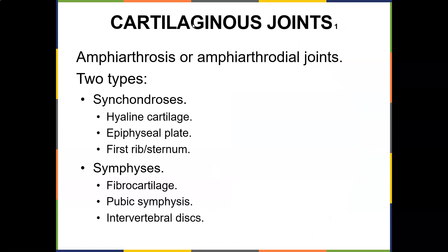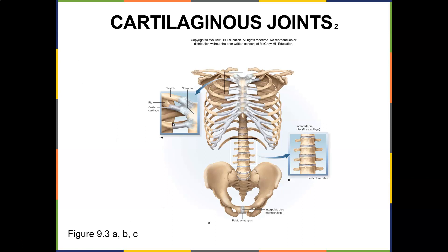Cartilaginous joints are amphiarthrosis or amphiarthrotal joints, and there are two types. Synchondroses involve hyaline cartilage — for example the epiphyseal plate, or the first rib and sternum. Then you have symphyses, which involve fibrocartilage — for example the pubic symphysis or the intervertebral disc. Here's an example of a cartilaginous joint: the pubic symphysis, the IV disc, and that first rib.